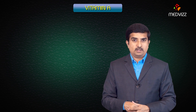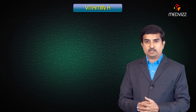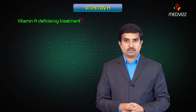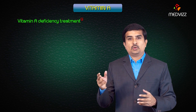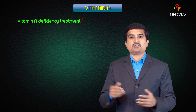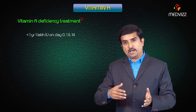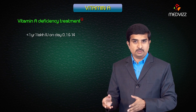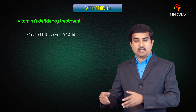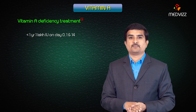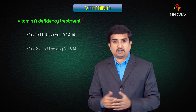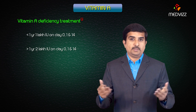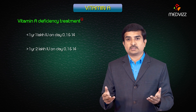For vitamin A deficiency treatment: if the patient is less than one year, 1 lakh IU is given on day 0, day 1, and day 14. If the patient is greater than one year, the dose is 2 lakh IU on the same schedule.